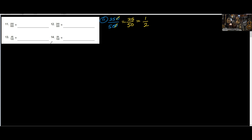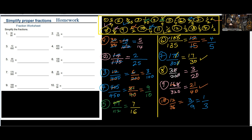Number 12 — we have 240 divided by 320. You can cancel a zero from each side giving 24 over 32. Then use 8: 8 into 24 is 3, 8 into 32 is 4. So the answer is 3 over 4, which means the submitted answer is incorrect.